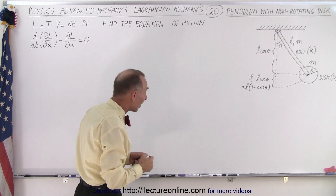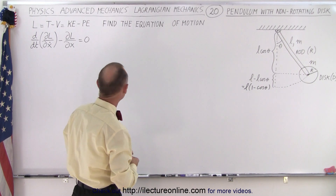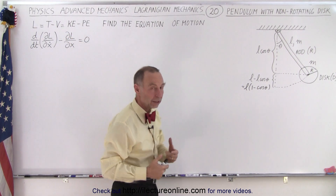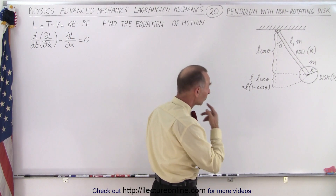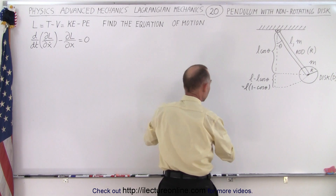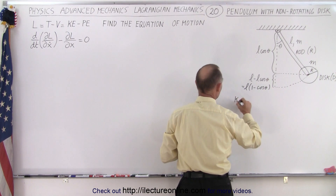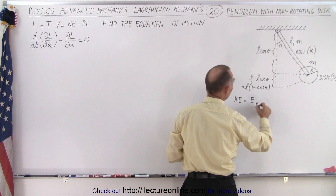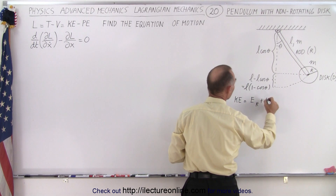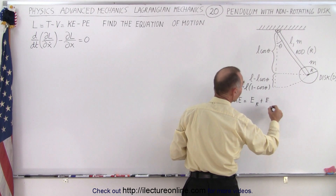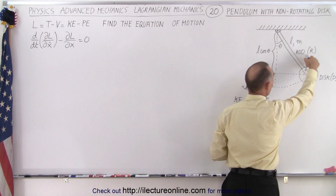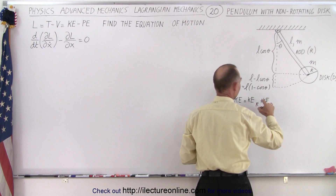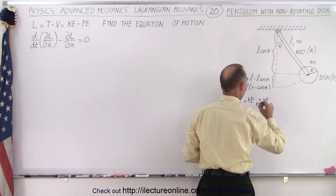Now we're ready to find the equation of motion. To do that we need to find the kinetic and potential energy to define the Lagrangian. Let's start with the kinetic energy. The kinetic energy will be equal to the kinetic energy of the rod plus the kinetic energy of the disc — I'll write KE_rod and KE_disc.